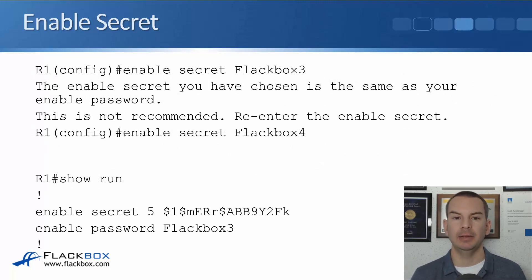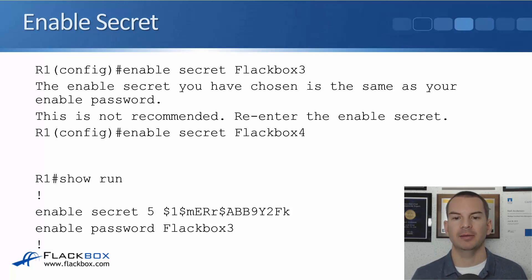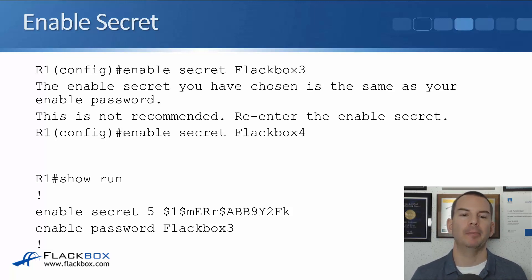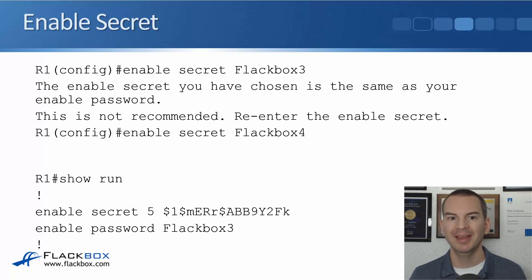So let's say we did have that enable password set as flatbox3, then we say enable secret flatbox3 — we'll get a warning message that says that's the same as your enable password, please use a different secret. So we could say enable secret flatbox4. Now if I do a show run, I can see that my enable secret is shown as scrambled letters and numbers, so it's not in plain text. But enable password still shows us plain text — flatbox3. In the real world, if you got that warning message, you would say no enable password to remove it, then set enable secret.